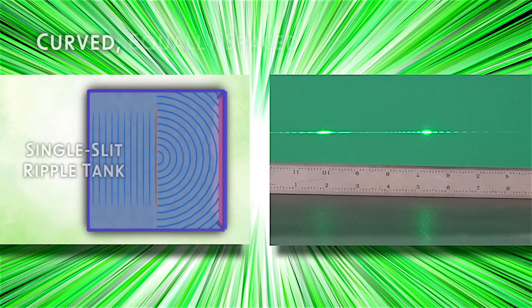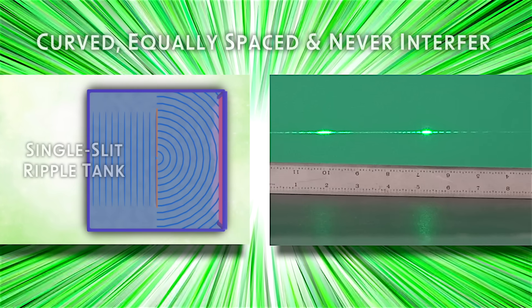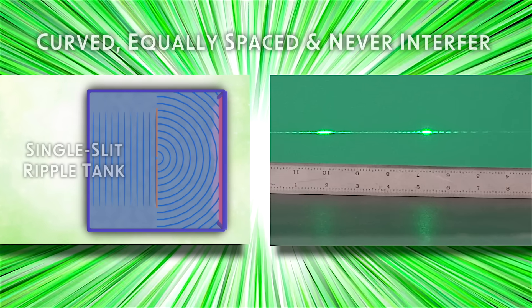Ripple tank demonstrations that imply photons act like water waves are misleading. Waves leaving a single slit are curved, equally spaced, and never interfere with each other. If photons behave like water waves, we shouldn't see any light-dark pattern at all.